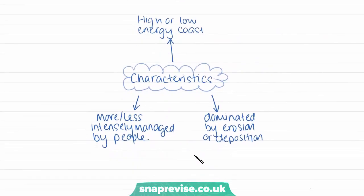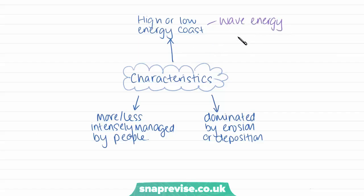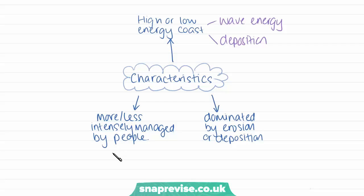We will have different characteristics of different coastlines. Firstly, depending on whether the coast is a high energy or a low energy coast — this relates to wave energy. Where we have higher wave energy, we'll have a high energy coast and greater erosion. A low energy coast will have more features of deposition. Another characteristic which will affect the landforms present is whether the area is more or less intensely managed by people. Some areas of coastland are uninhabited and really left to nature, whereas other places are very much inhabited and full of human activities. This relates back to whether we have coastlines dominated by erosion or deposition, which relates back to whether we have a high or low energy coast.